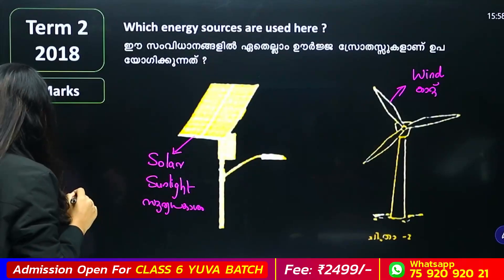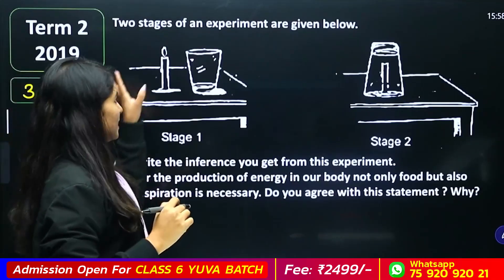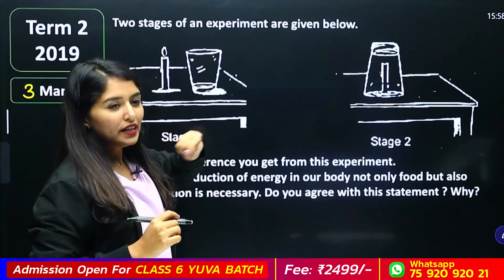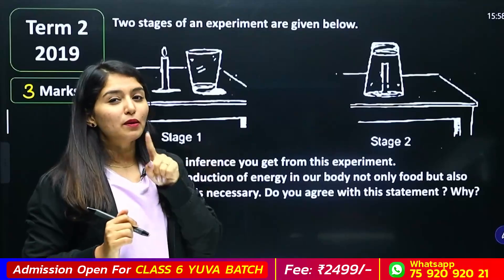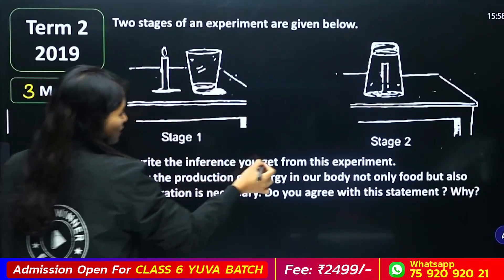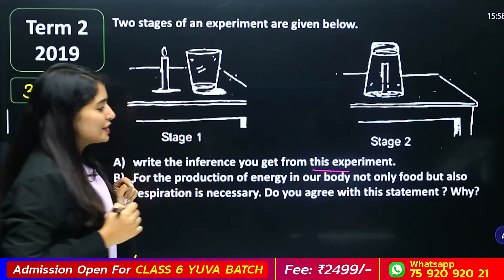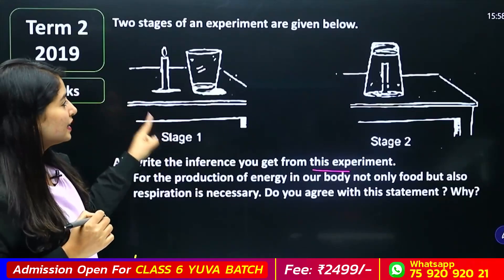In your third question, two stages of an experiment are given below. The experiment is from my textbook. What is the inference you get from this experiment? Your experiment — in the new...